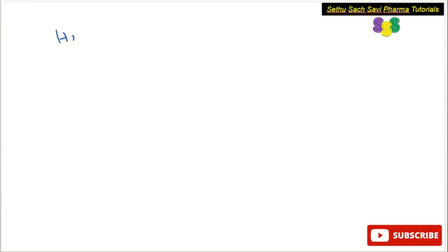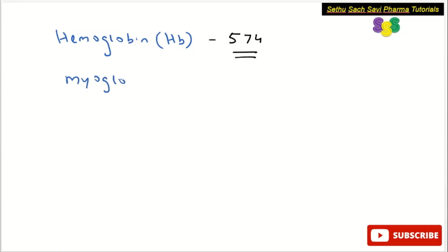One more thing to remember is the number of amino acids in certain proteins. Hemoglobin is a protein made up of a large number of amino acids — the exact number is 574. Myoglobin, another transport protein, is made up of 153 amino acids. Remember these numbers for hemoglobin and myoglobin.